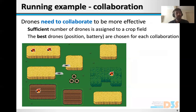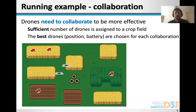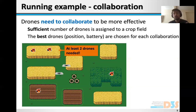In this scenario, drones need to collaborate in order to be more effective both in scaring off flocks and also in patrolling an area. A crop field might be bigger than what one drone can actually handle, so maybe two or more drones might be needed in order to be effective in scaring off the flocks, which is also depicted here in the picture.